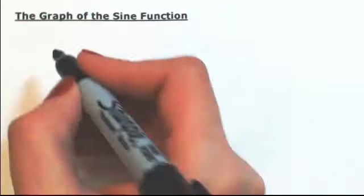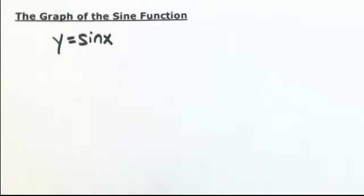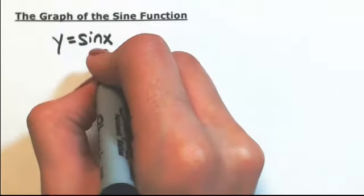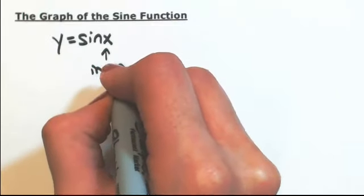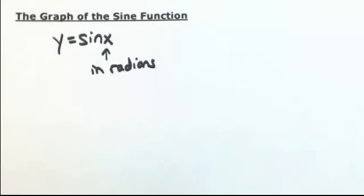Graph the sine function. So y equals sine of x. Now x is going to be our angle. This is going to be in radians so that our x-axis is dimensionless. And so our y-axis will just be the dimensionless values, which are the outputs.